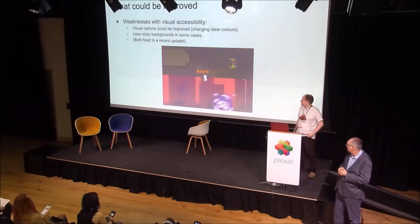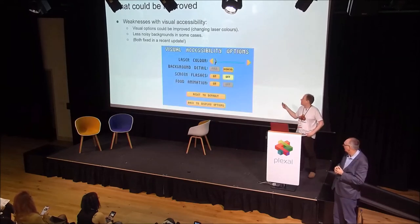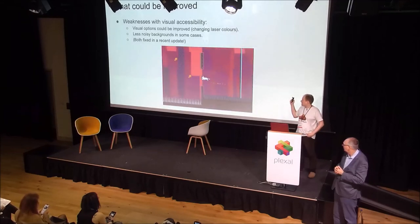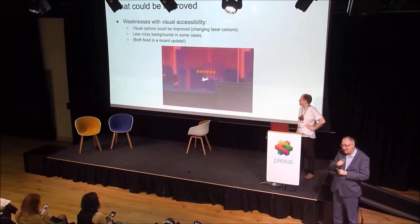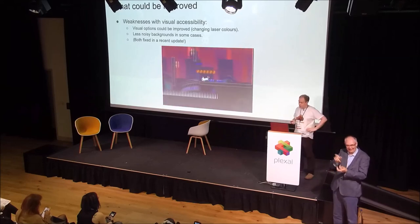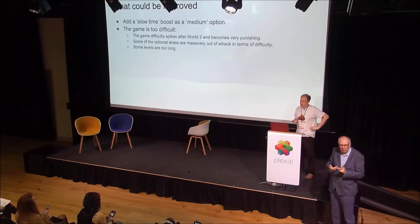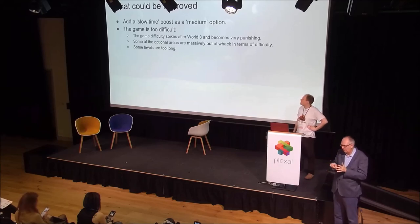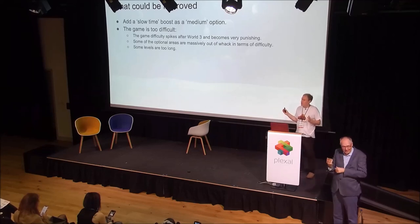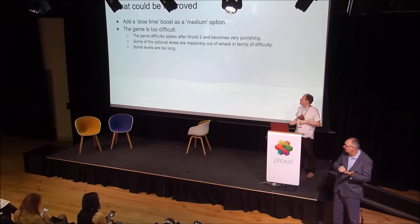There were weaknesses with visual accessibility — for example, a pink laser chasing the cat against a reddish background, and a lot of distracting background detail, so I included options to fix that. For the next game I might add a visual accessibility pillar to deal with this upfront. The boosts in the game are also a bit all-or-nothing; it would have been nice to have a slow-time option as a medium setting. The biggest problem is the game is too difficult and frustrating — there's a difficulty spike after World 3, it becomes very punishing, and there are no checkpoints. The levels were designed to be short partly for mobile, but I could have done more to keep them shorter.